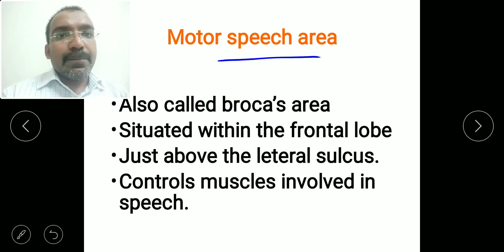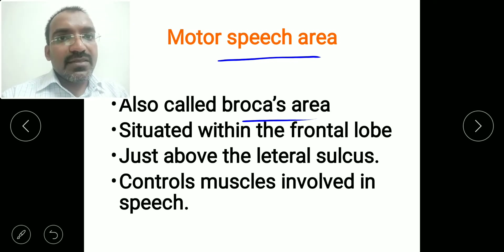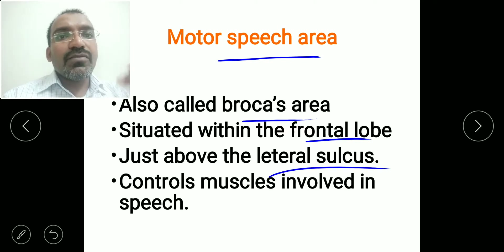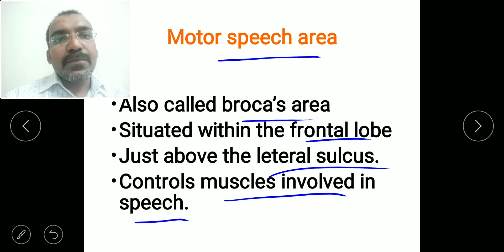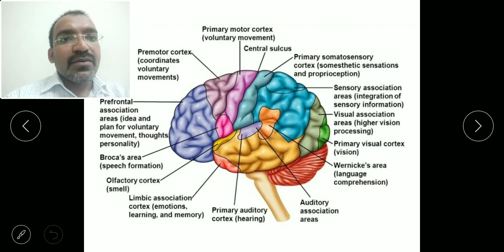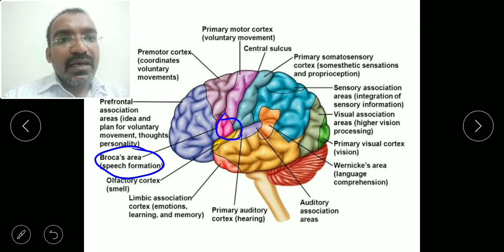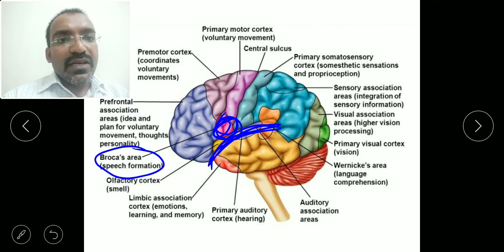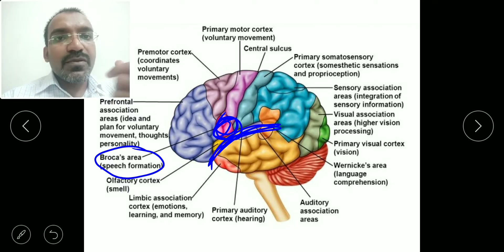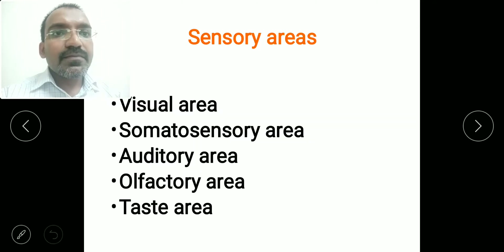The motor speech area, also called Broca's area, is situated within the frontal lobe, present just above the lateral sulcus, and it controls the muscles involved in speech. Here you can see the motor speech area, or Broca's area, located in the frontal lobe just above the lateral sulcus, responsible for controlling the muscles involved in speech.